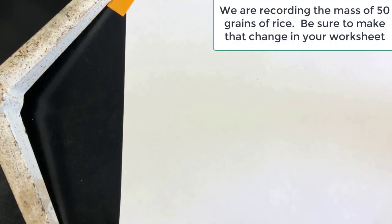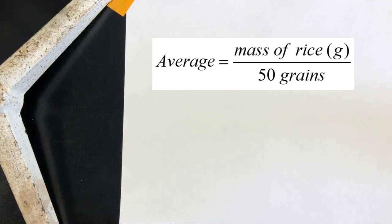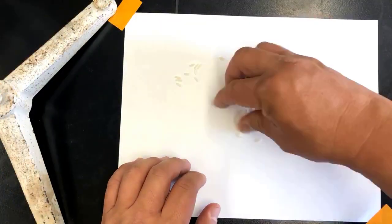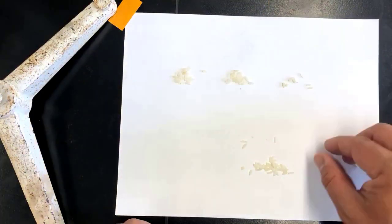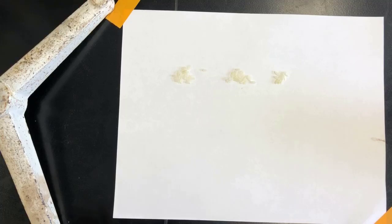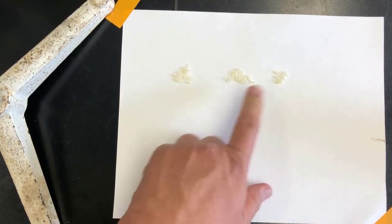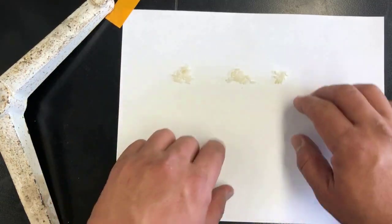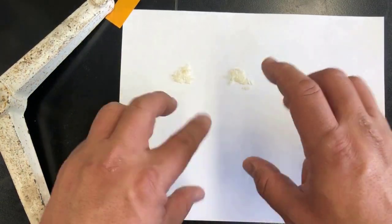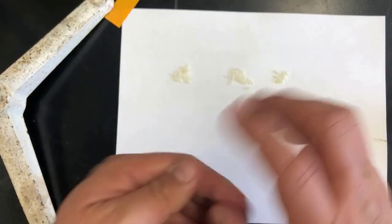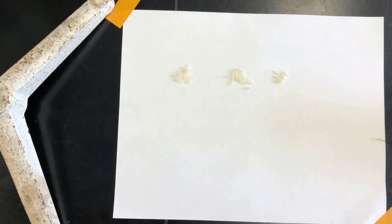Now it says to count out 30 grains of rice, but I'm actually going to do 50, and then we'll use that. That'll give us a little bit better of an estimate. So when you calculate the average mass or the mass of one grain, you'll not divide by 30, but we'll divide by 50. All right, so that is 50 grains. There's two piles of 20 and a pile of 10. There were some broken ones in there, so for some of these I kind of put little broken pieces in there, but I'm trying to get it to be four whole grains of rice.